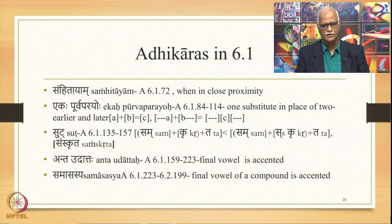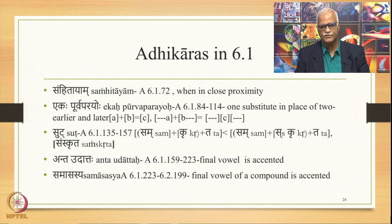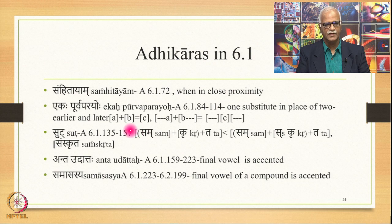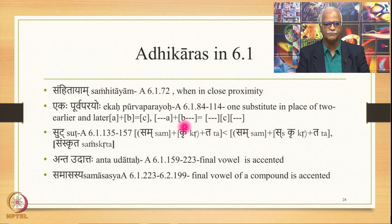Then we go to 6.1. The main Adhikara is Samhitayam from 6.1.72 up to 6.1.158, meaning 'when in close proximity, do the substitution of sounds in the given conditions'. Another important Adhikara in the same section is Ekahpurvaparayoh from 6.1.84 to 6.1.114, meaning 'one substitute in place of two — earlier and later'. If we have A plus B, then in place of both of them we get C. If a sequence ends with A and another sequence begins with B, then in place of A and B you get C, with the remaining parts unchanged. Before this, from 6.1.72 up to 6.1.84, there are two sutras where A plus B gives the output C plus B.